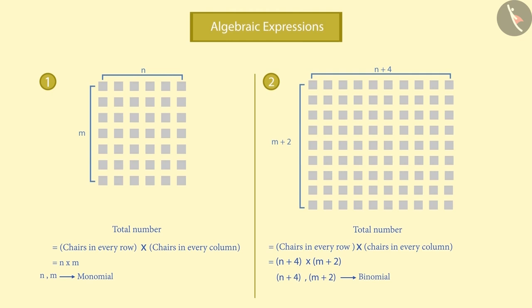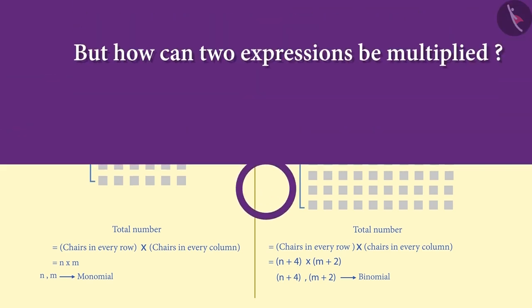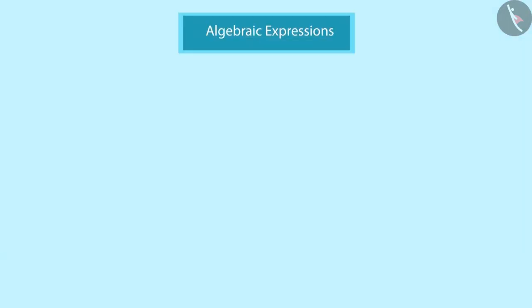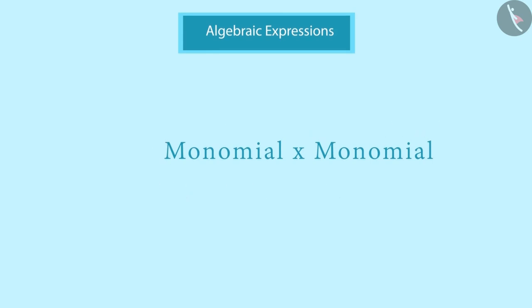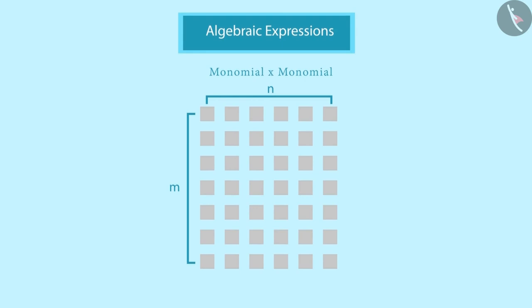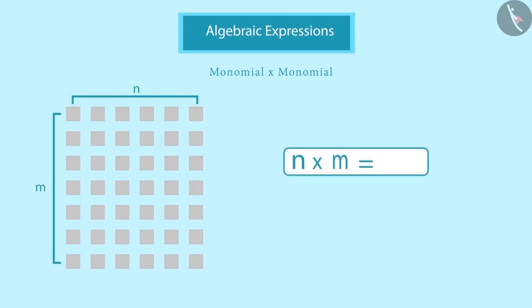We have seen that in some circumstances we may have to multiply algebraic expressions. But how are two expressions multiplied? Let us look at the multiplication of two monomials at the beginning. We saw such a multiplication in the first situation — the multiplication of N and M is equal to NM.